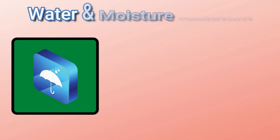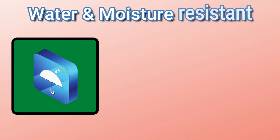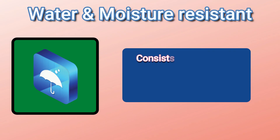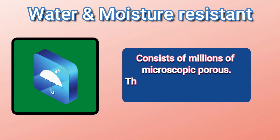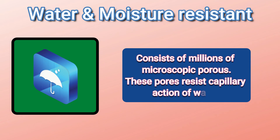Next is the water and moisture resistant qualities of ALC Panels. They consist of millions of microscopic pores. These pores resist capillary action of water and restrict the flow of water and moisture into indoor areas.